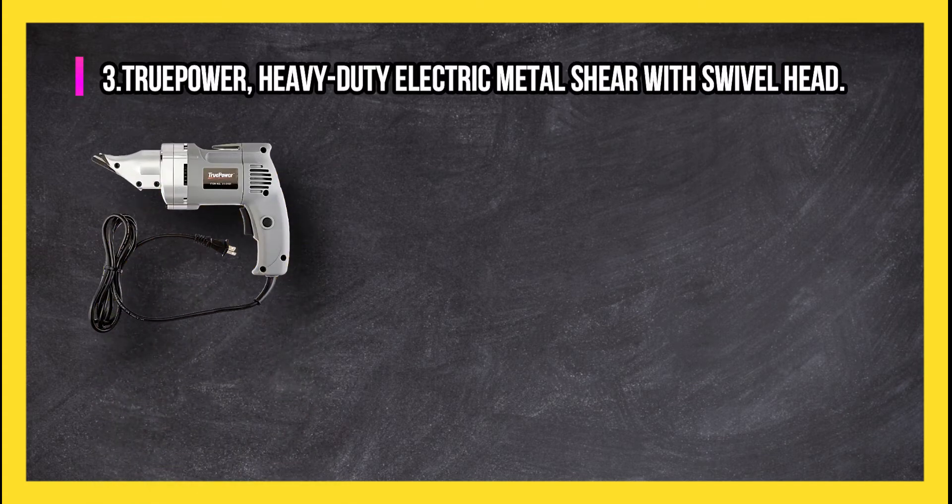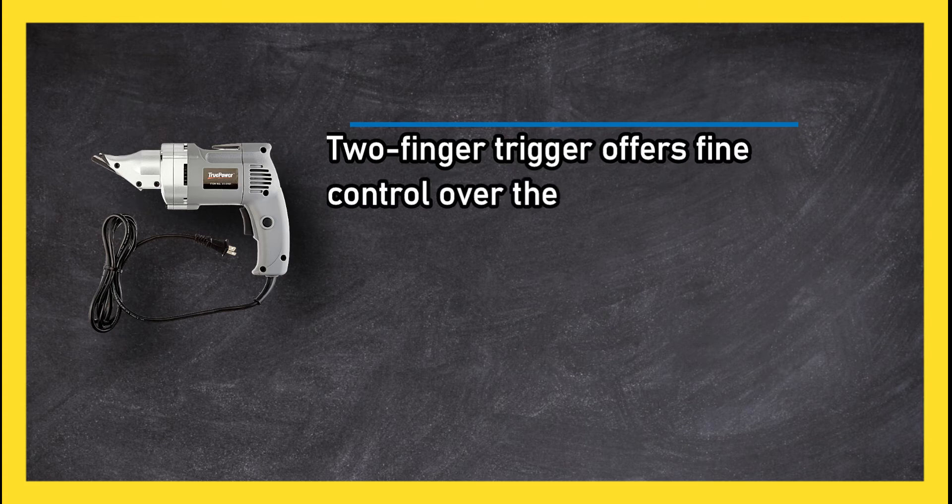At number three: TruPower Heavy-Duty Electric Metal Shear with Swivel Head. Two-finger trigger offers fine control over the speed of the three-blade cutter.